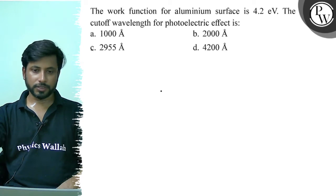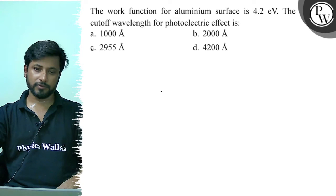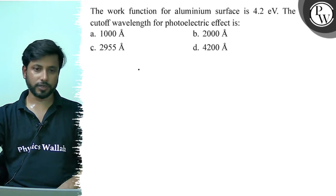Option A, 1000 angstrom. Option B, 2000 angstrom. Option C, 2955 angstrom. Option D, 4200 angstrom.